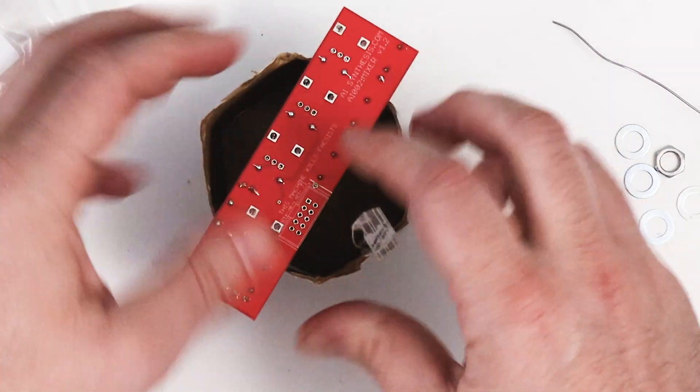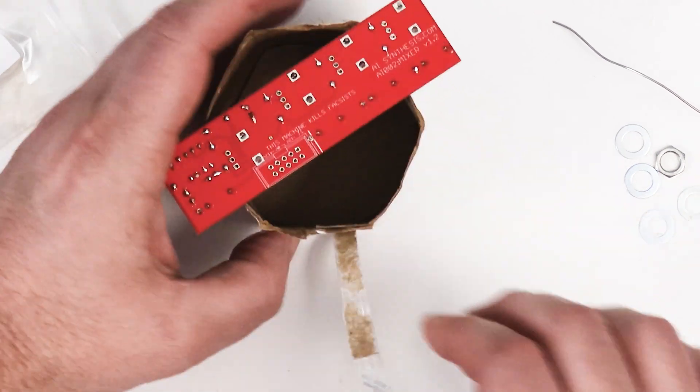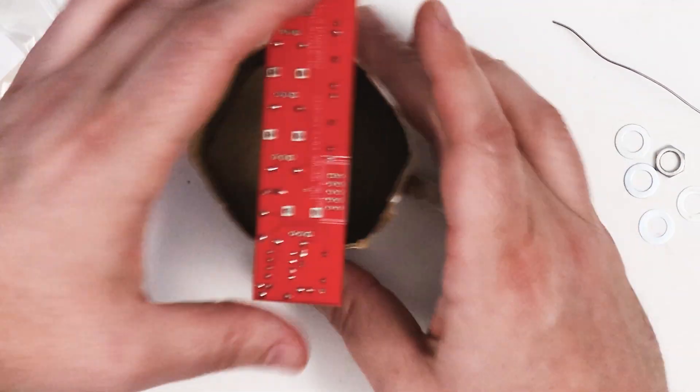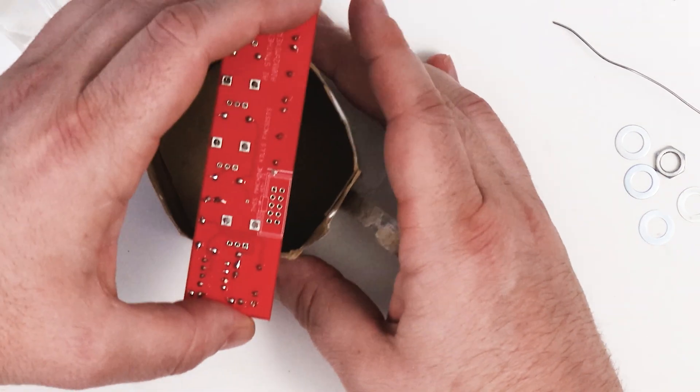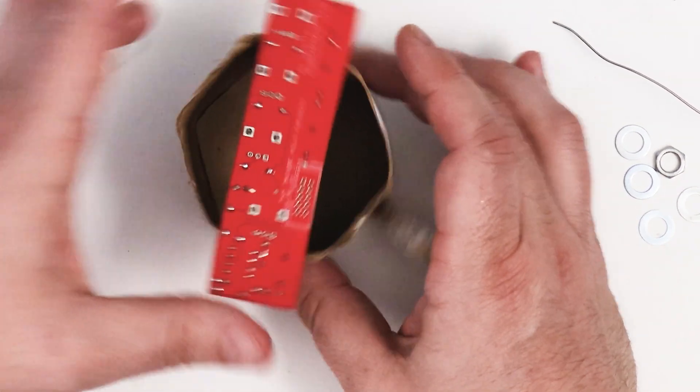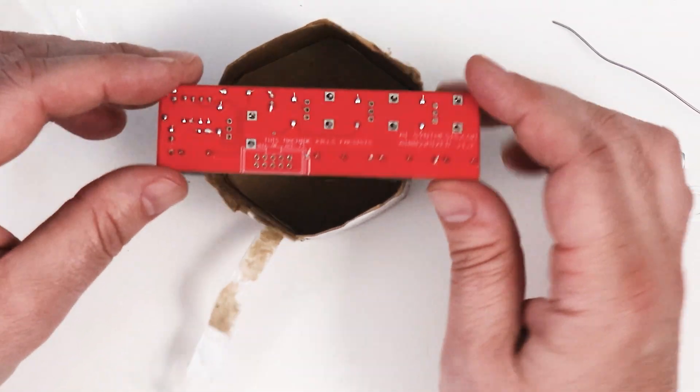So I had a hard time figuring out how to get this to stand up. I didn't have any type of stand, so I used the box from the solder. And that seemed to work pretty well to get it just to be horizontal.